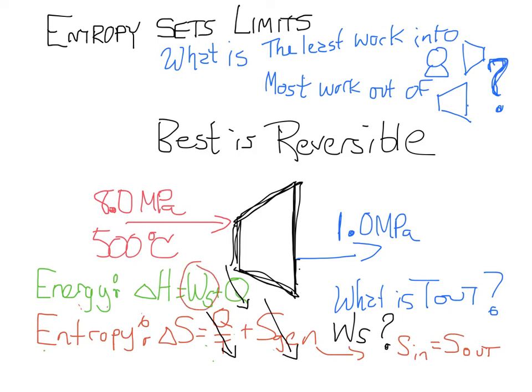To get that WS, we're going to have to figure out delta H. Well, we can't get delta H until we know what the conditions are on the outlet side, and so we're kind of stuck there. We can figure out H in, but we can't get H out. So now, what do we do next?